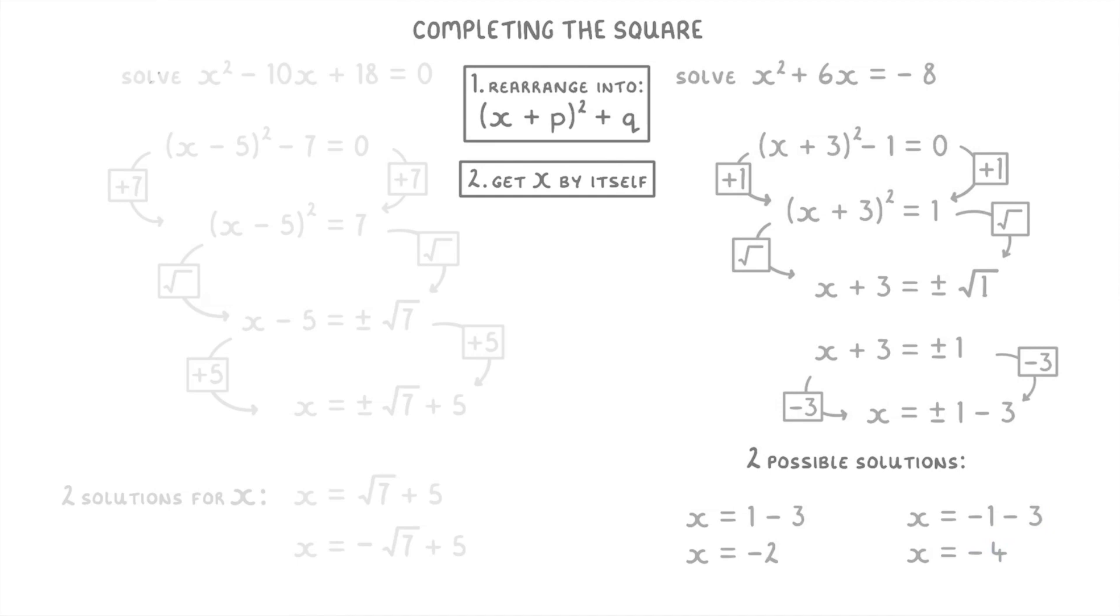So to sum all of this video up, whenever you want to solve a quadratic equation using the completing the square technique, you need to first of all rearrange it into the form of x plus p squared plus q, which we do by completing the square. And then you need to rearrange it again to get the x by itself. And whatever x is equal to is your solution. But you'll normally end up with two solutions.